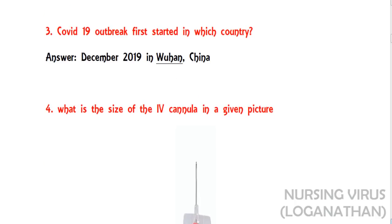The third question: the COVID-19 outbreak first started in which country? We all know very well — it was December 2019, in Wuhan city, China, where the first outbreak started.